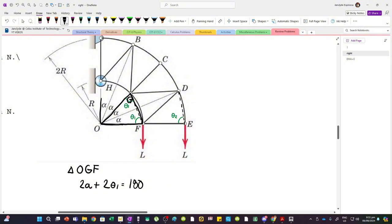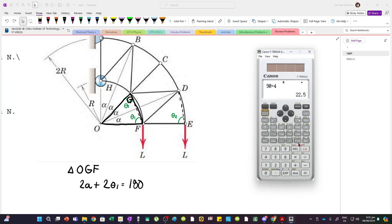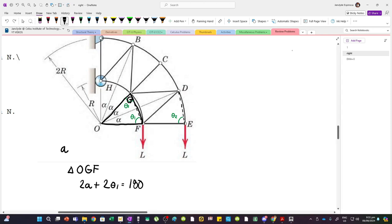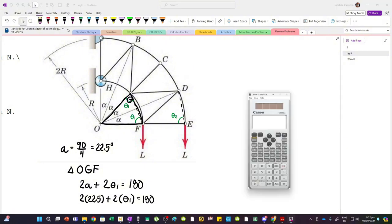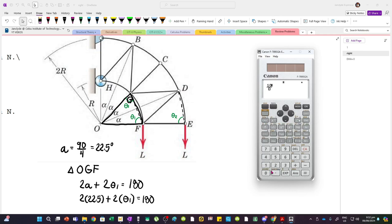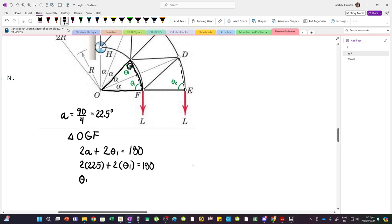Considering triangle OGF, we have 2 alpha. This angle is also theta 1 because they're along the same arc. So 2 alpha plus 2 theta 1 must equal 180 because the sum of interior angles in a triangle is 180. Since this is 90 degrees divided by 4, alpha is 22.5.